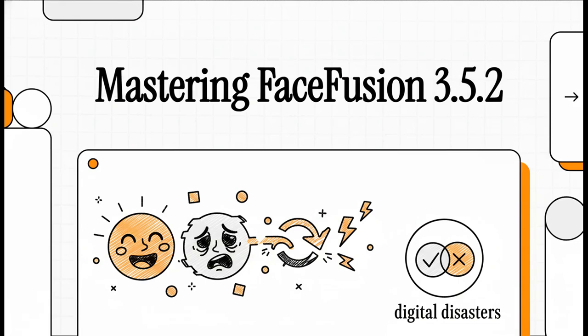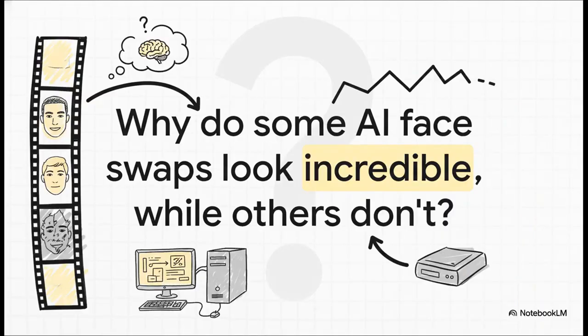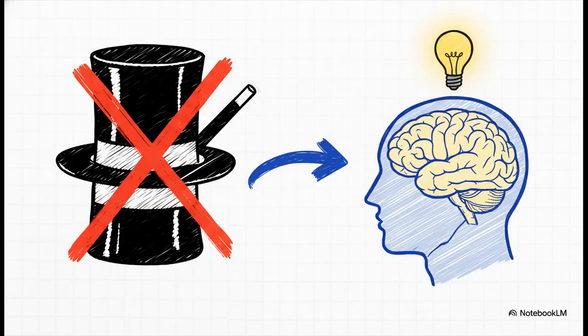Let's talk about FaceFusion. It's this incredible AI tool that can give you absolutely stunning photorealistic results, but it can also give you complete digital disasters. So today we're going to dive in and figure out how to get it right every single time. You see one face swap online that is just flawless — it looks like something straight out of a Hollywood movie — and then you see another one that's just a glitchy, horrifying mess. The secret isn't magic and it's not a bigger computer. It's just knowledge. The huge gap between those amateur results and the pro-level stuff all comes down to understanding FaceFusion's super powerful and sometimes hidden controls.